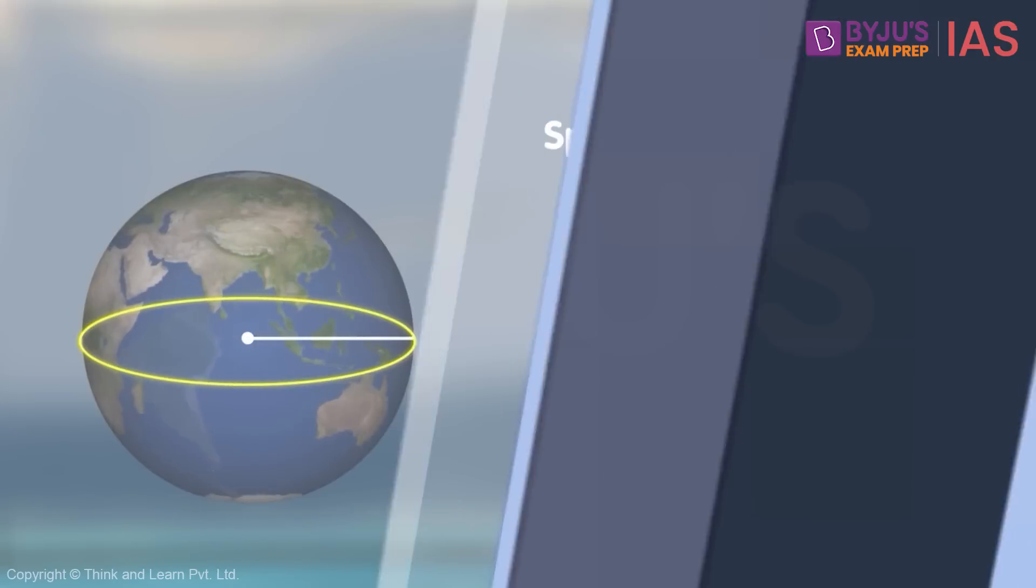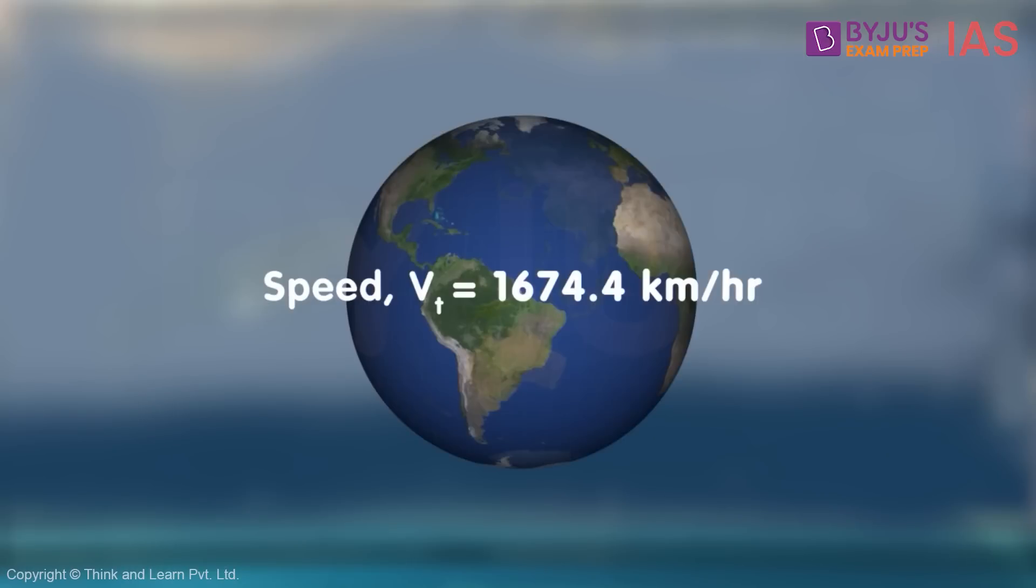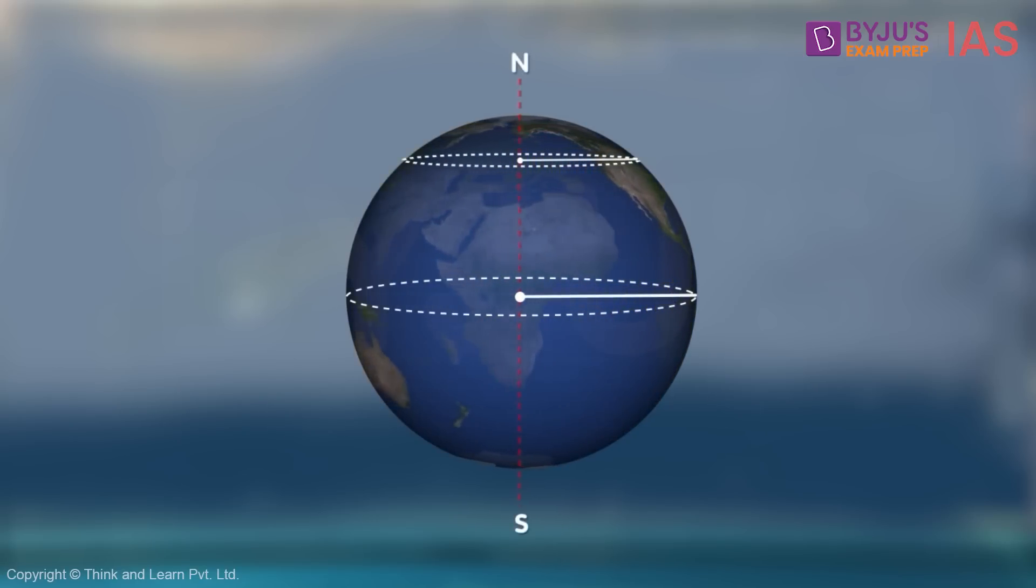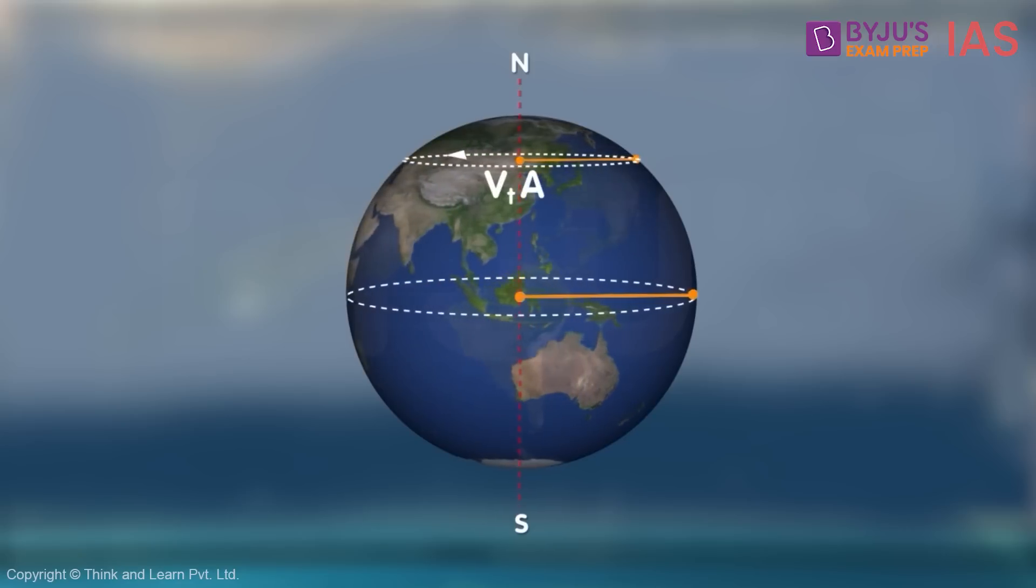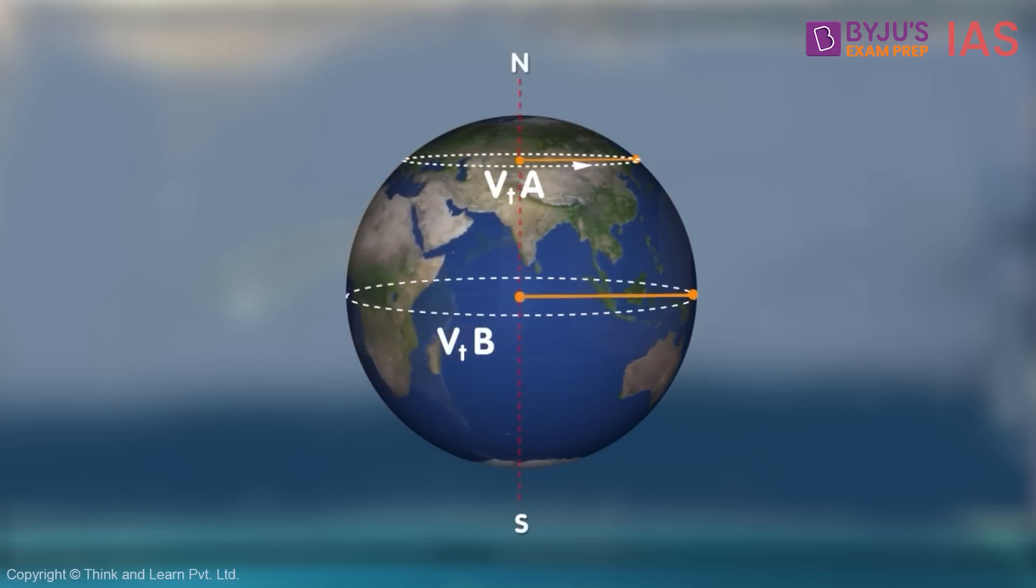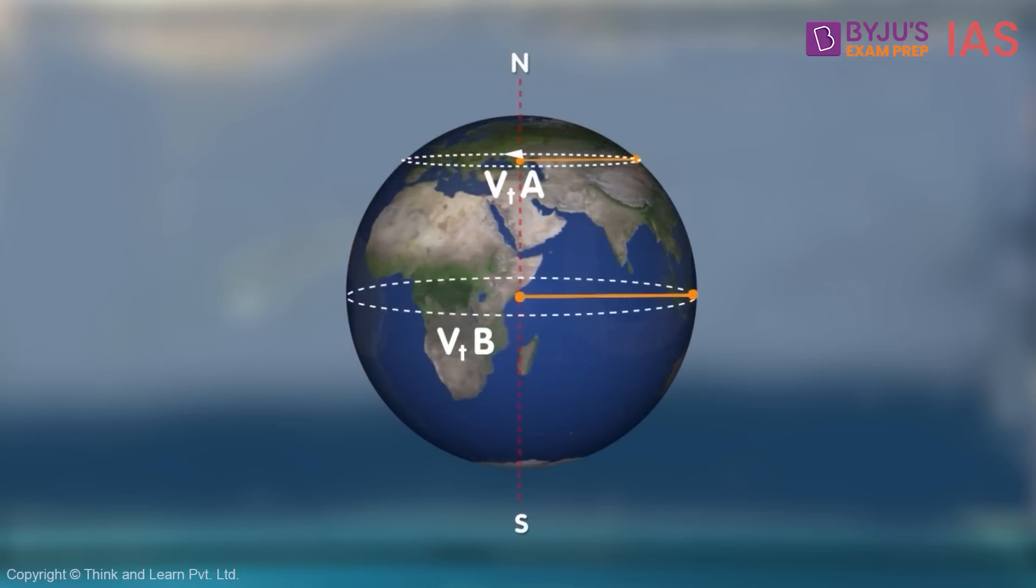But there is a catch here. Not all points on the earth have a velocity of 1674.4 km per hour. As we move towards the poles, the distance of a point on the surface of the earth from the axis of the earth decreases. This decreases the distance that a point needs to travel in one rotation. And this in turn reduces its velocity.